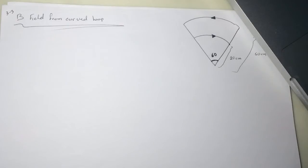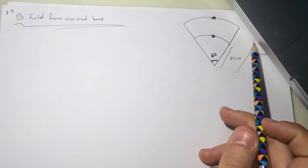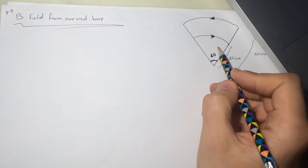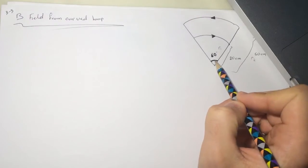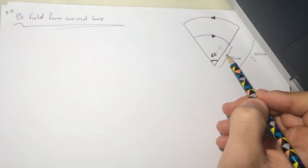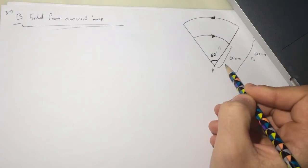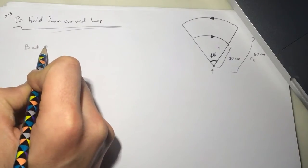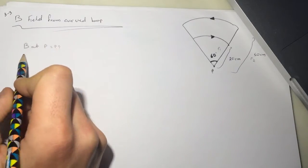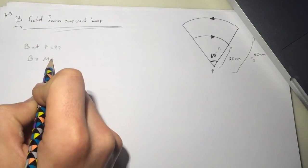Hi guys, this is Smart Physics tutorial for the B field from a curved loop. We have this loop with a smaller radius R1 and a bigger radius R2. This is the angle between them. We want to know the magnetic field at point P.